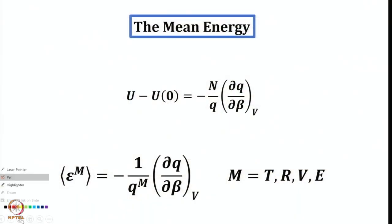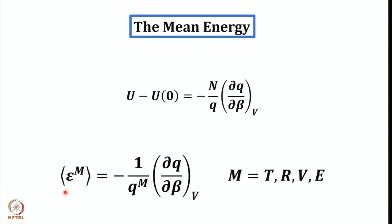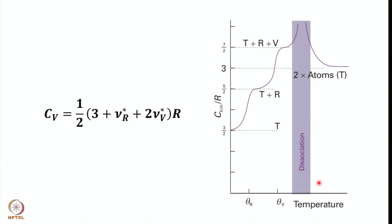Mean energy, which we discussed a couple of lectures before, is given by minus 1 over Q_M, del Q by del beta at constant volume, where the M mode represents translational, rotational, vibrational, and electronic. We then discussed in detail how to connect heat capacity at constant volume with the temperature derivative of mean energies.